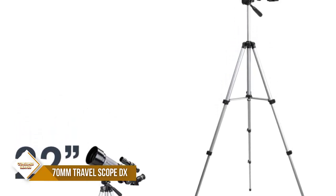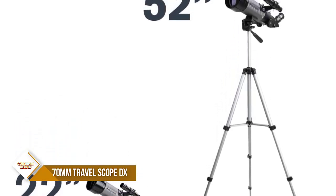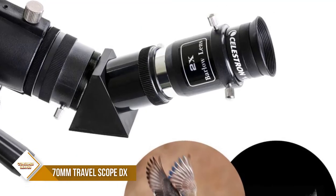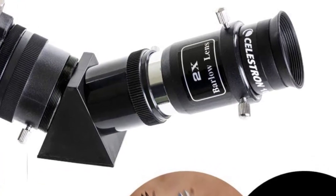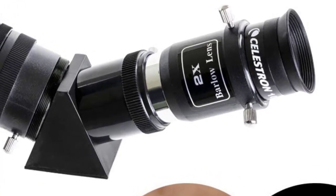Your telescope comes complete with these wonderful accessories: two eyepieces, 20mm and 10mm, a 2x Barlow lens, a finderscope, an erect image diagonal, a smartphone adapter, a Bluetooth shutter remote, and a moon filter.